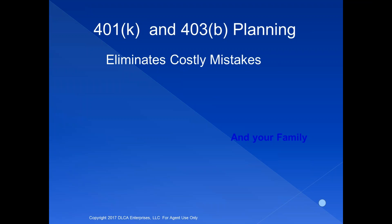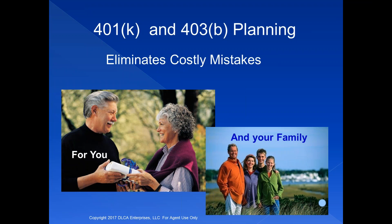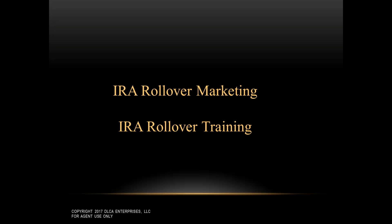401k and 403b planning can eliminate very costly mistakes — not only for the participant but also for the participant's family. That was a simple way of using pure logic, and that's chapter 8 in the book 'Top 10 IRA Mistakes.' That chapter has been responsible for moving large amounts of money out of 401ks, 403bs, and similar plans into IRAs. Now let's talk about IRA rollover marketing and IRA rollover training.